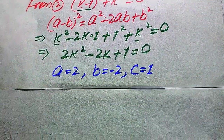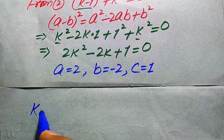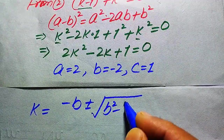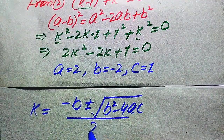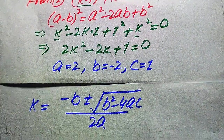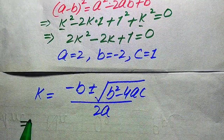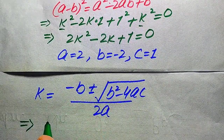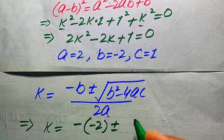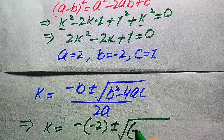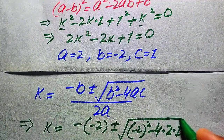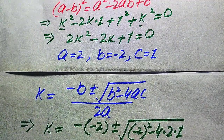The quadratic formula is k equals minus b plus or minus square root of (b² minus 4ac), divided by 2a. Substituting: k equals minus(minus 2) plus or minus square root of (minus 2)² minus 4 times 2 times 1, all divided by 2 times 2.